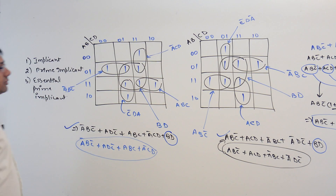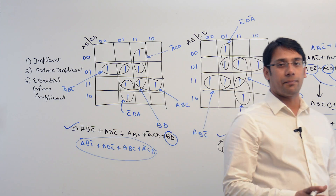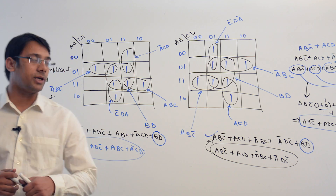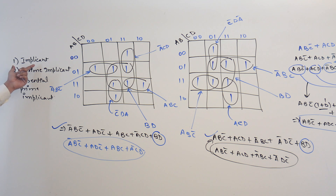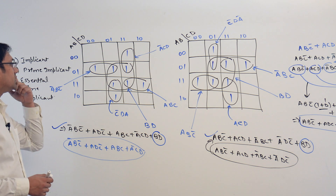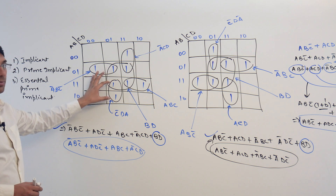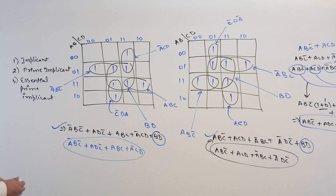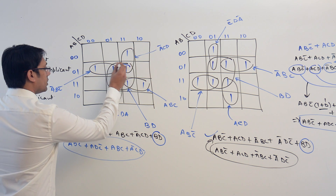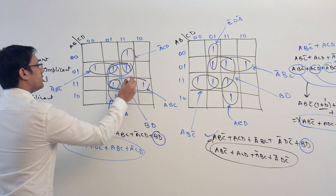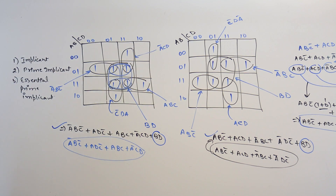First, let me define what is an implicant in informal terms. An implicant is every subcube — every subcube creates or forms an implicant. For example, this subcube is an implicant, this subcube is an implicant, this subcube is an implicant, this is an implicant. Even if you make a smaller subcube, this is an implicant. So, every subcube is an implicant.